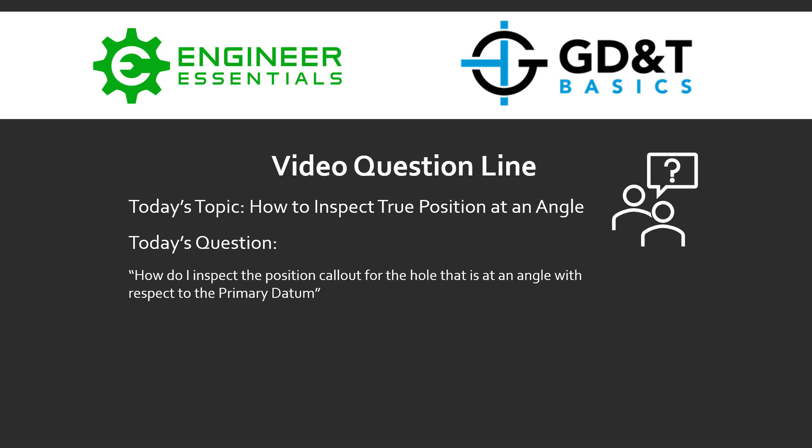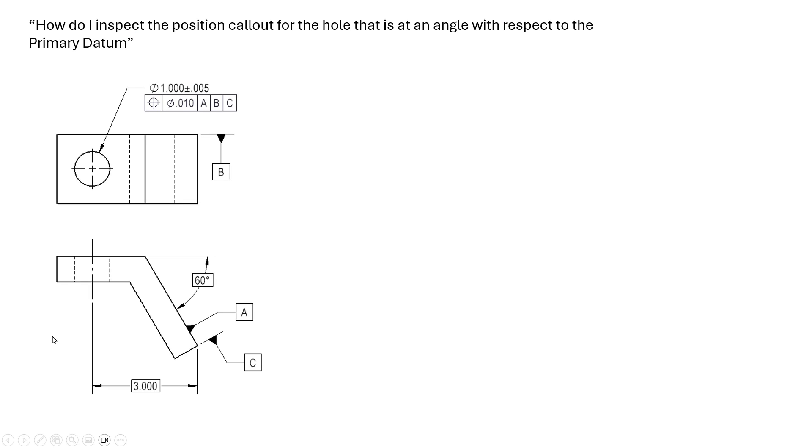Hey everybody, Jason here again with GD&T Basics. On today's video question line, our topic is how to inspect true position at an angle. Today's question was: how do I inspect the position callout for a hole that's at an angle with respect to the primary datum — more specifically, at an angle that isn't 90 or 180 degrees?